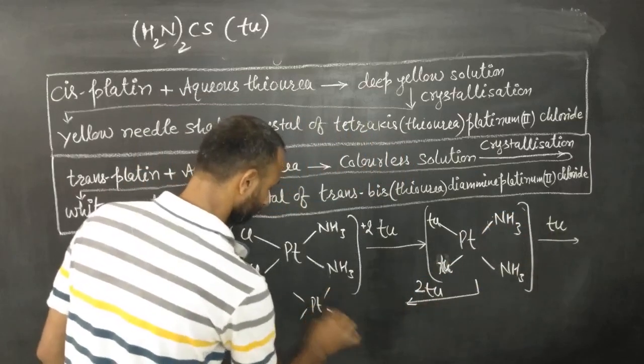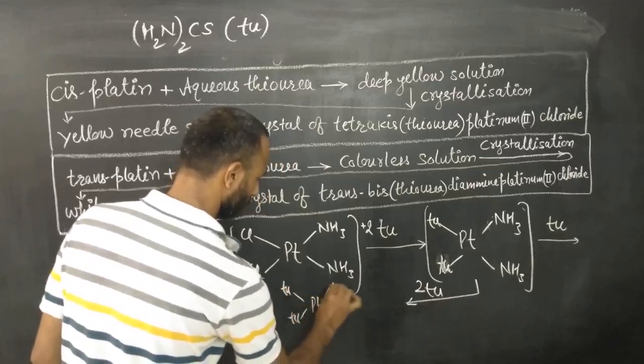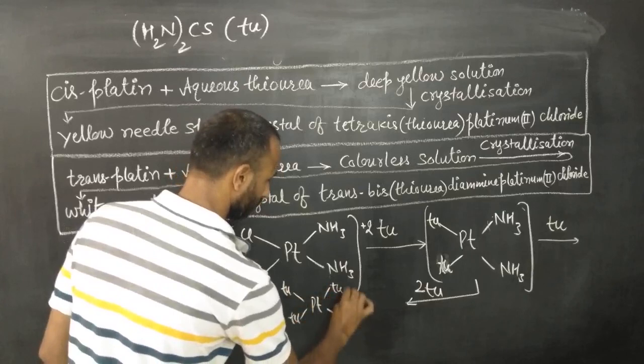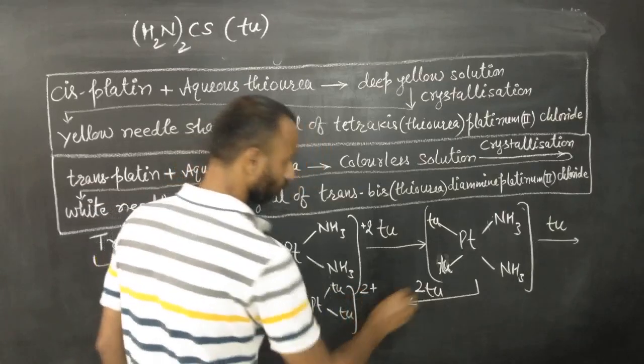And we get the final product as thiourea, thiourea, thiourea, thiourea, and two plus.